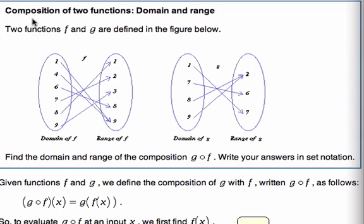When it's asking you to find the domain and range of two composite functions, you're basically looking at what values you can input and what values you get for your output. Domain are your x values and range are your y values. But when you're looking at composition of two functions, you kind of need to look at the composition first.